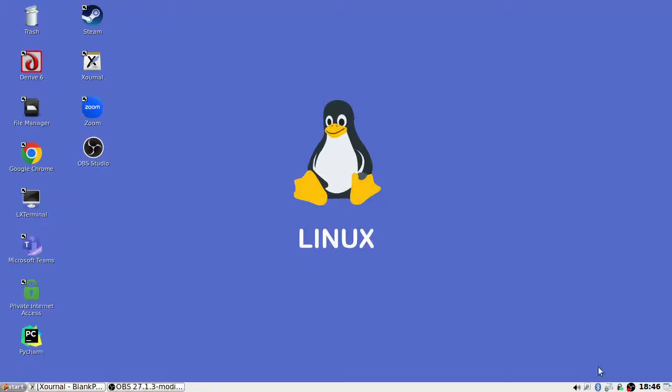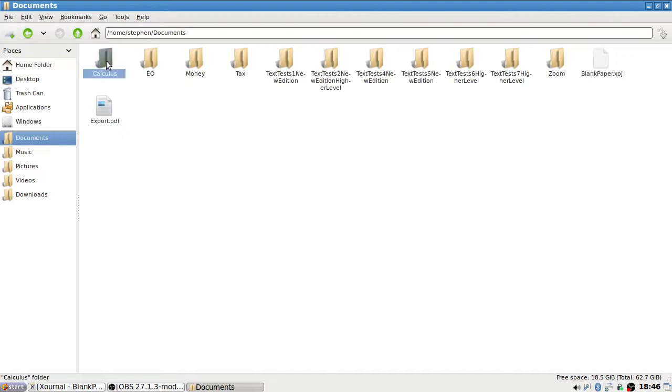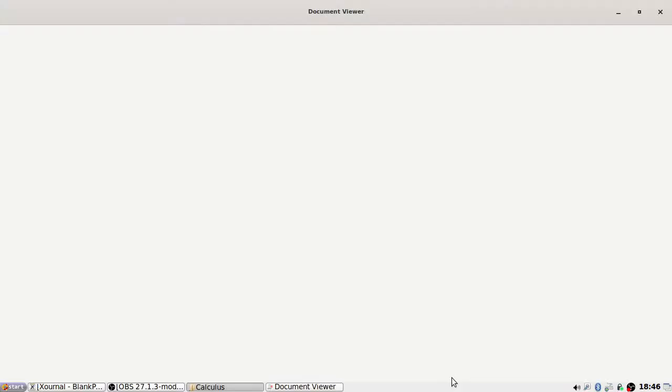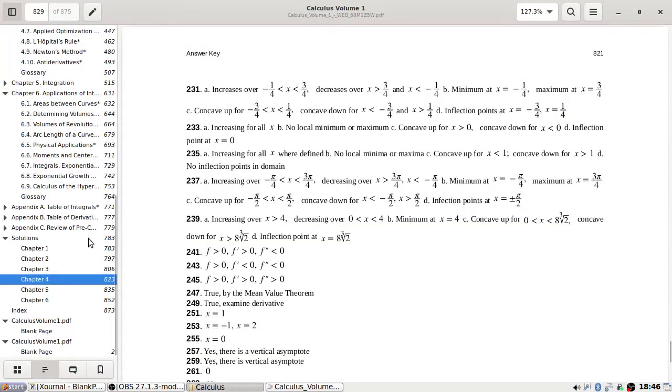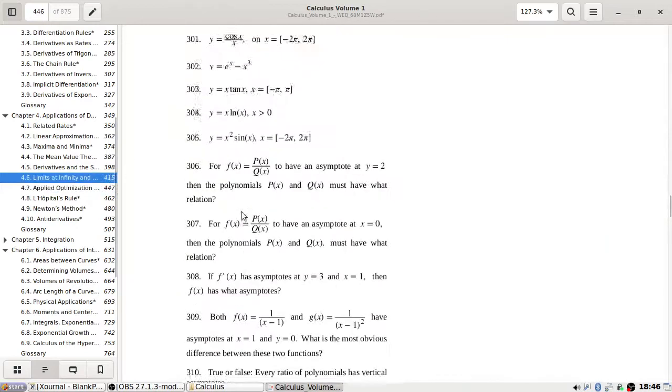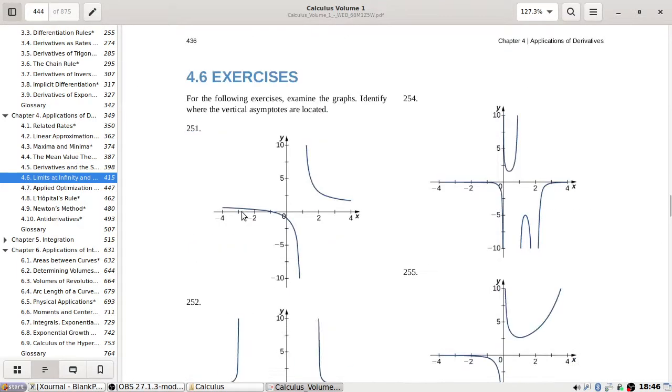Okay, let's continue. Let's see. I think limits at infinity. For the following exercise, on the graph identify where the vertical asymptotes are located.